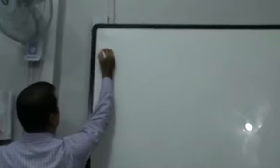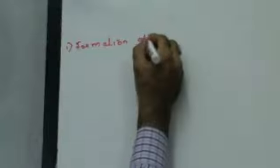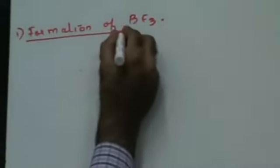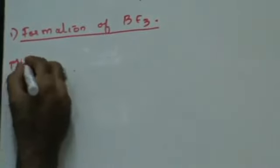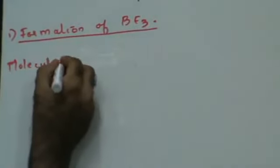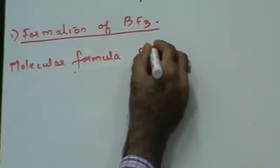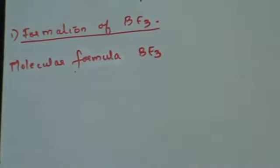Let's see the formation of Boron Trifluoride. Let's keep our format the same. First thing: molecular formula. The molecular formula of Boron Trifluoride is BF3.